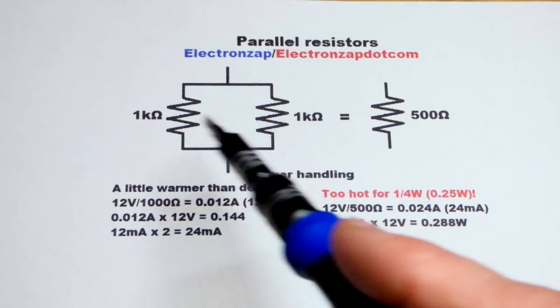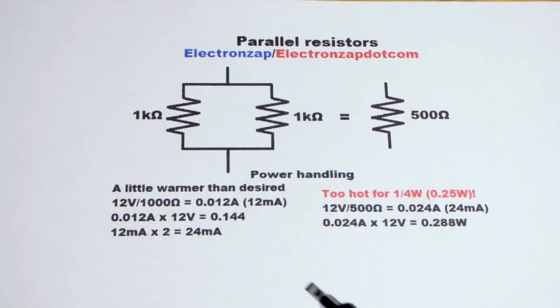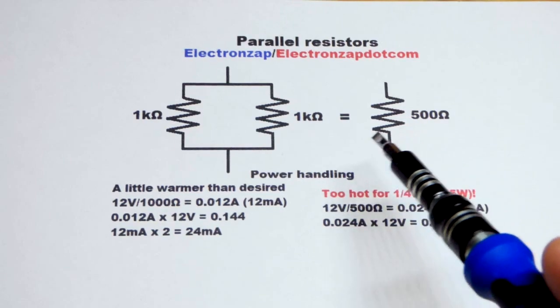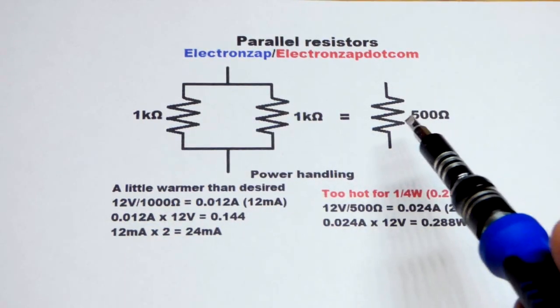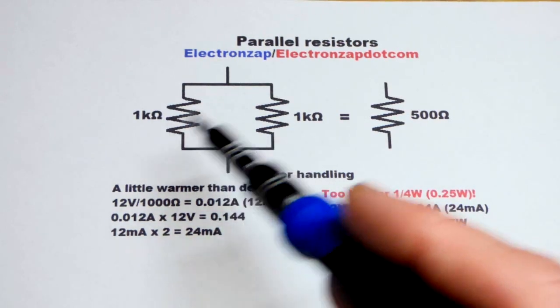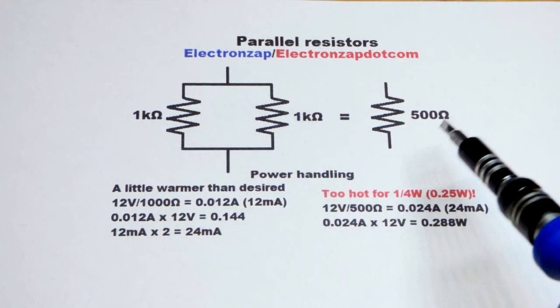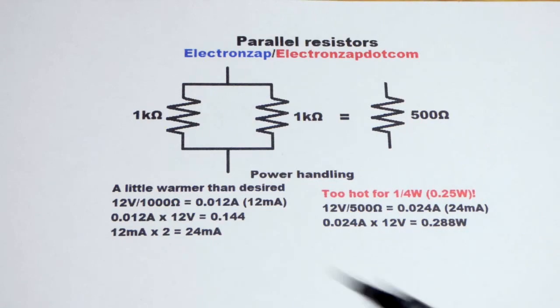If they're equal value resistors, 1000 ohms, 1000 ohms, it makes it pretty simple. You put two of them in parallel, you will have half the resistance, 500 ohms. If you had three in parallel, you'd have about 330 ohms of equivalent resistance.